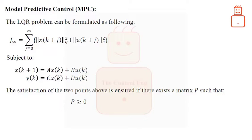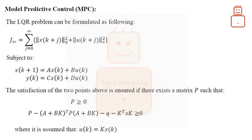The satisfaction of the two points is ensured if there exists a matrix P such that: the weighting matrix P is semi-positive definite, and the following inequality that is derived from Lyapunov stability is true. In deriving the second inequality, it is assumed that u equals to K multiplied by the state x, that is a state feedback.